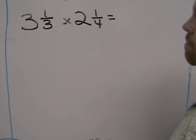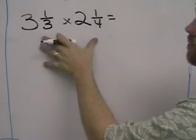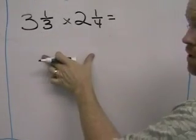Alright, to multiply mixed numbers, the first step is you need to turn both of these mixed numbers into fractions.